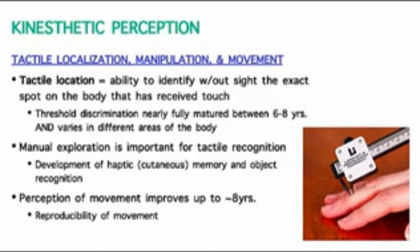There are also studies where people close their eyes and the experimenter places the arm in a certain position — maybe a mixture of shoulder flexion and elbow flexion — then tells the person to relax and asks them to replicate that movement. Those are examples of measuring reproducibility of movement as an assessment of someone's kinesthetic perception.